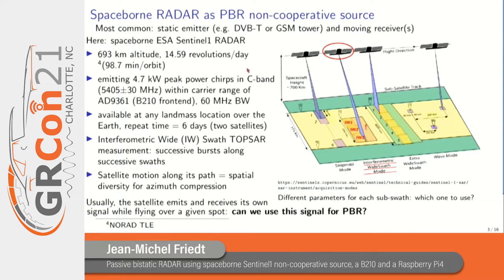Sentinel-1 emits a peak power of about 5 kilowatts, which explains why we selected it as a source for passive bi-static radar. It's a C-band radar emitting in the 5 to 7 GHz band, which is within the capability of the B210 front-end AD9361, with a bandwidth of 60 MHz — that's going to be more of a challenge. The radar emits over landmass in the interferometric-wide swath mode, with three successive swaths swept during the satellite's motion along its orbit, producing bursts one after another.